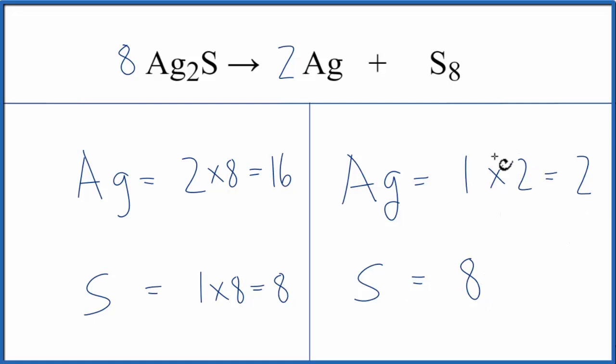But we're going to have to do something different here with the silver. It's actually pretty simple. We need 16 silvers on this side, and we have one here. If we just put a coefficient of 16, one times 16, that's 16. And this equation's balanced.